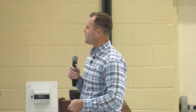Larvae can also choose what they like to eat. If you allow a second instar to choose rather than force-feeding it one tissue type, it can survive much better and will actually choose to feed on different tissue types. We looked at what percentage of tissues were fed on by second instars — it's sort of like going to a buffet. We're likely not going to just hone in on the salad or steak; it's good to vary their diet.